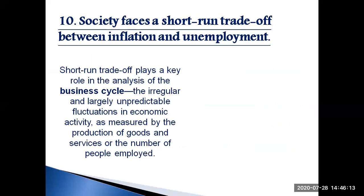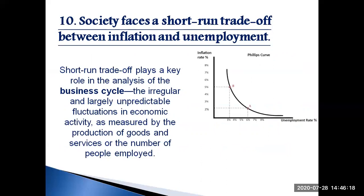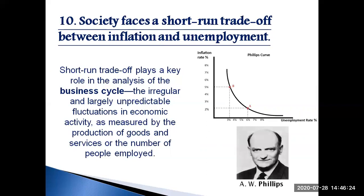This line of reasoning leads to one final economy-wide trade-off — a short-term trade-off between inflation and unemployment — illustrated by the short-run Phillips curve. The Phillips curve is an economic concept developed by A.W. Phillips, stating that inflation and unemployment have a stable and inverse relationship. The theory claims that with economic growth comes inflation, which in turn should lead to more jobs and less unemployment. Although some economists still question these ideas, most accept this short-term trade-off.